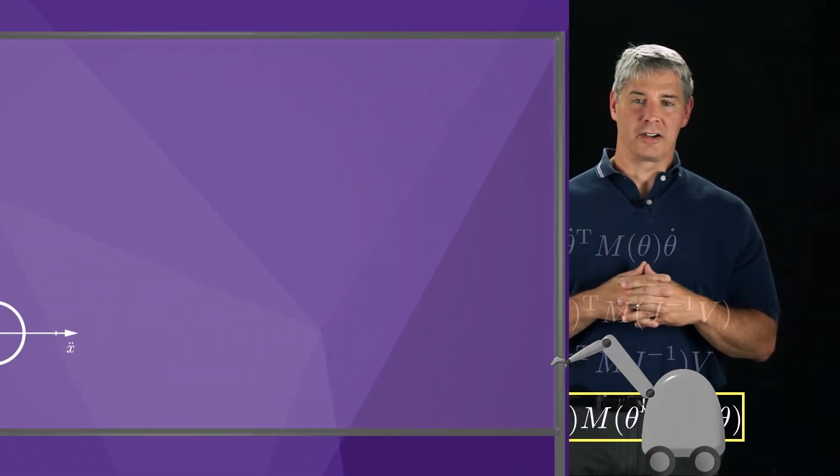Now if you consider a circle of endpoint accelerations when the robot is at rest, we can map this through the end effector mass lambda to get an ellipsoid of endpoint forces, depending on the robot's configuration. This ellipse is easier to understand.